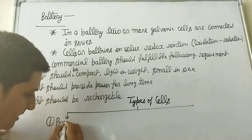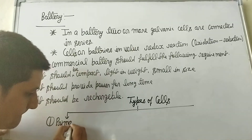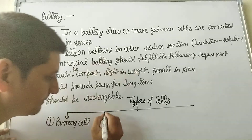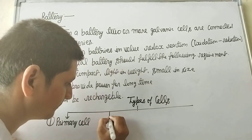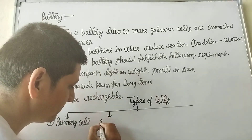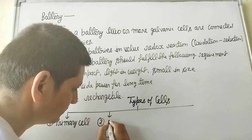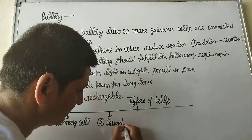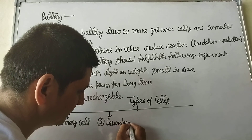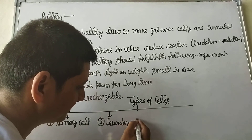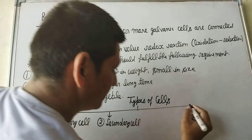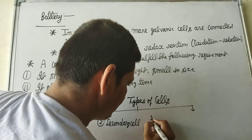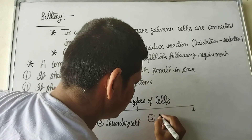The three types of cells are: Number 1, primary cell. Number 2, secondary cell. Number 3, fuel cell.